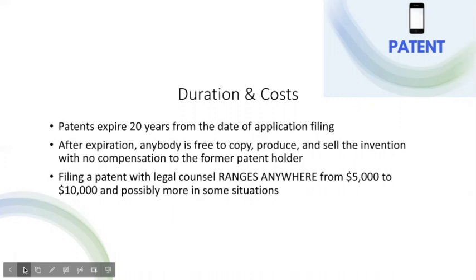Because the process of preparing a patent application is so complex and tedious, the overall cost of obtaining a patent is significantly more expensive than obtaining trademark or copyright registration. With the assistance of an attorney, you can expect to pay anywhere from $5,000 to $10,000 for a patent, and this can easily be higher depending on the overall complexity, your geographical location, and the amount of experience the attorney has. Patents are granted generally for a 20-year term from the date of filing. After the 20-year term expires, anybody is free to copy, produce, and sell the invention with no compensation to the former patent holder.